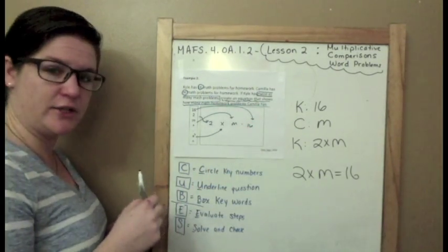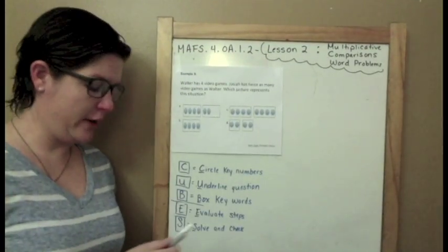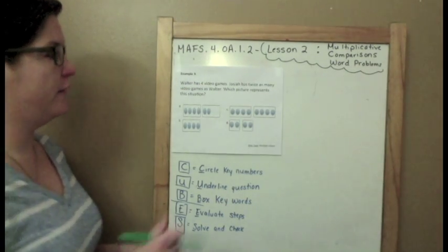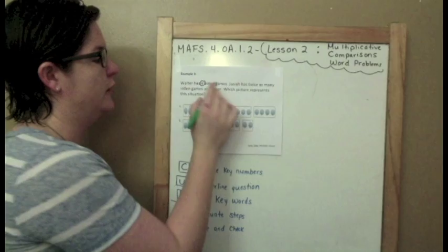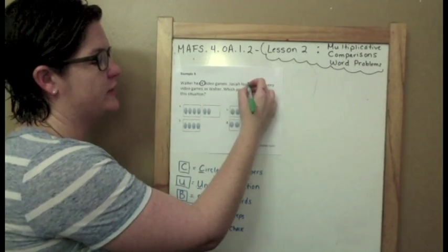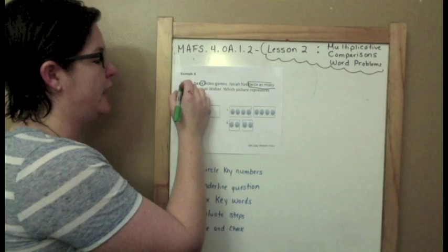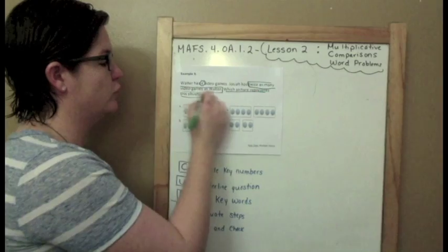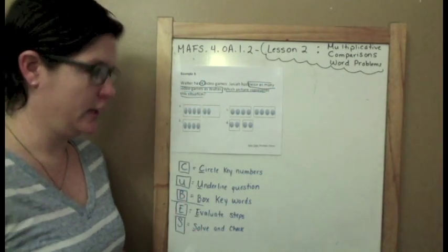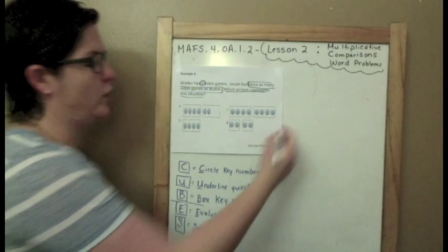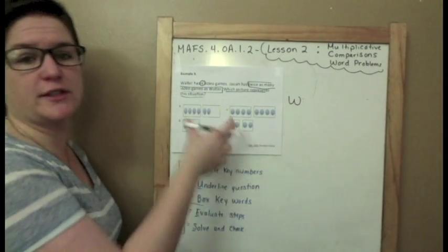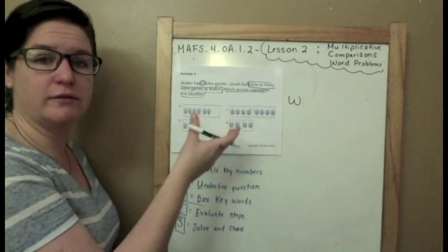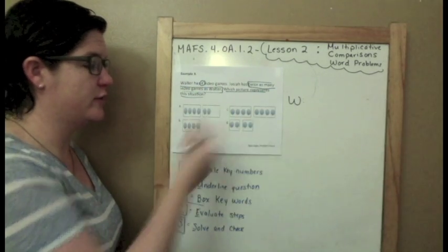And that's how you solve it. We're on Example 3 now, everybody, and we have our boy Walter here. Walter has 4 video games. Josiah has twice as many video games as Walter. Which picture represents this situation? Let's go over here and make some sense of it. So Walter has 4, and I'm going to use pictures this time to represent it because this multiple choice type problem requires the use of pictures, but you could also have used pictures for the other ones too.